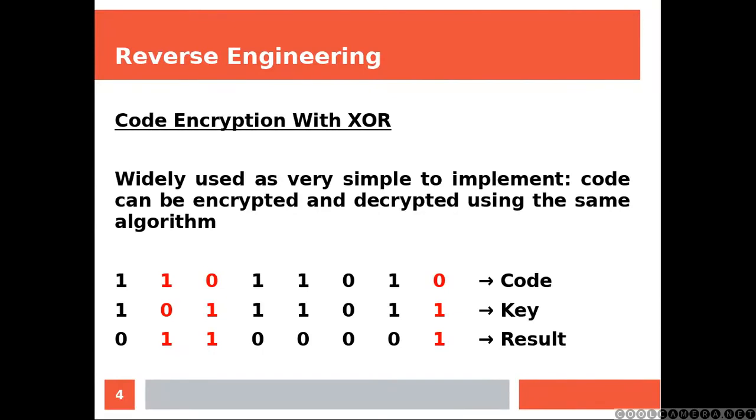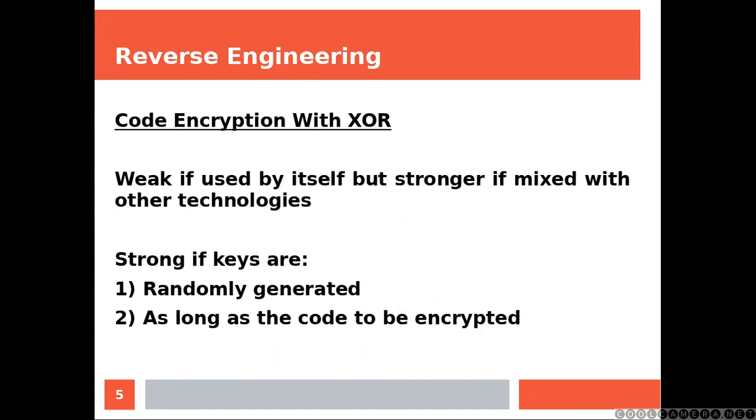Code encryption with XOR. Widely used as very simple to implement. Code can be encrypted and decrypted using the same algorithm. So, that's the code you want to encrypt. That's the key, and that's the result. And that's the same even when you want to decrypt. You get 1 when the code and the key are different. Otherwise, you get 0. Now, this algorithm is weak if used by itself, but is stronger if mixed with other technologies. Also, XOR is strong if the keys are randomly generated, and they are as long as the code they are asked to be encrypted.